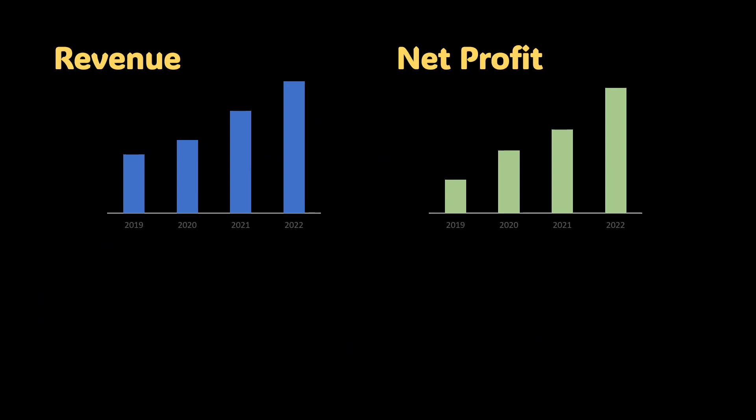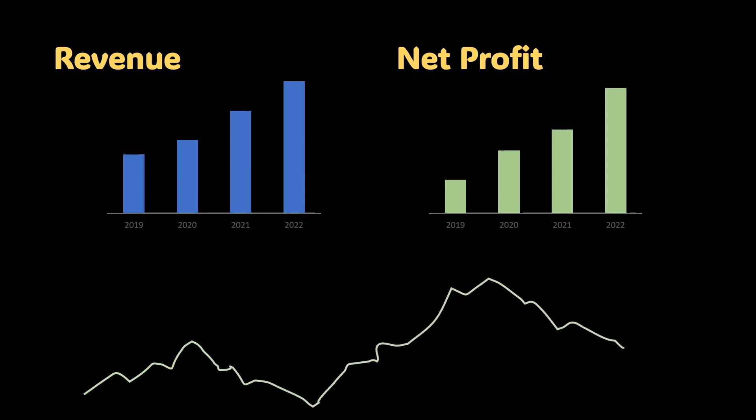The net profit also increases. If you filter by revenue and profit increase, you will have at least 2,500 stocks. But if you want to use special conditions, it is very rare — that's our stock price filter.